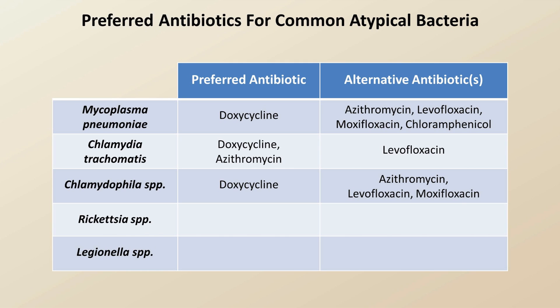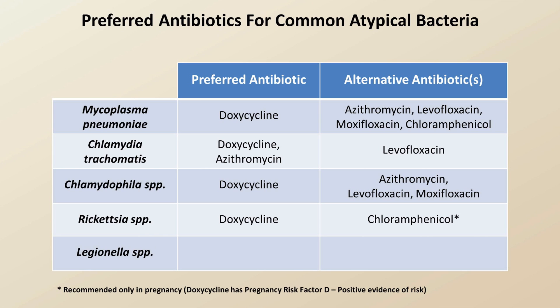Rickettsial infections, including the ones not specifically named earlier, are also best treated with doxycycline. Chloramphenicol is recommended as the alternative for use in pregnancy, as doxycycline is assigned a pregnancy risk factor D, meaning there is evidence of fetal harm described in the literature. Treatment of rickettsial infections in pregnant women is the only time that chloramphenicol is preferentially used in the United States.